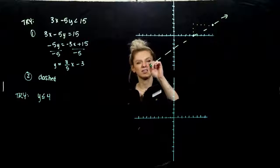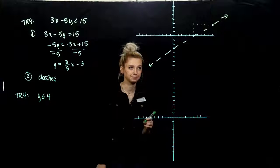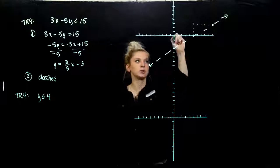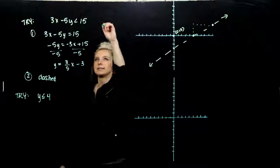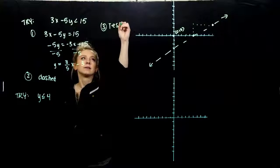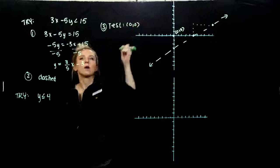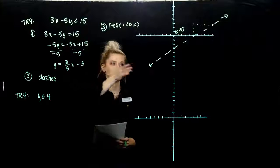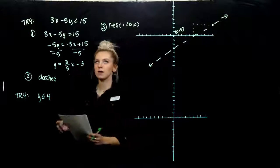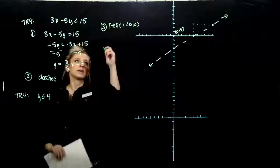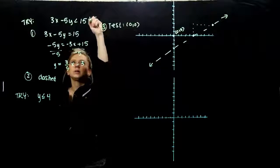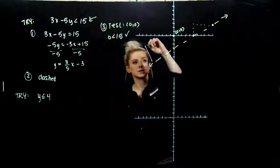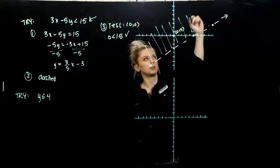We need to choose a test point in one of the half planes. The easiest one to plug in is (0, 0). Test it in the original inequality — not the equality case, since we already know points on the boundary line don't help. Plugging in gives 0 less than 15, which is true. So that tells me we need to shade the upper half plane.